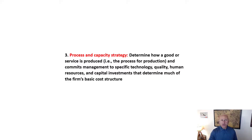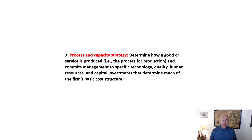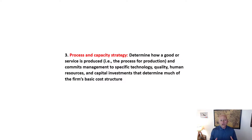Process and capacity strategy is another key component. This is determining how a good or a service is produced — the process for production. And how commitments to management, specific technology, quality, human resources, and capital investments all go into those basic cost structures.